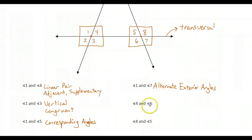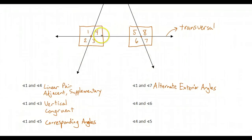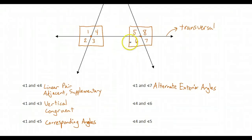If we look at four and six: four and six are between the two lines — they're on the inside, they're interior. Angle four is above the transversal and six is below. Above and below alternate — they're on opposite sides and between the two lines. They are alternate interior angles.